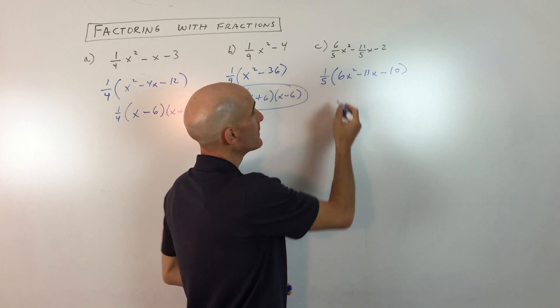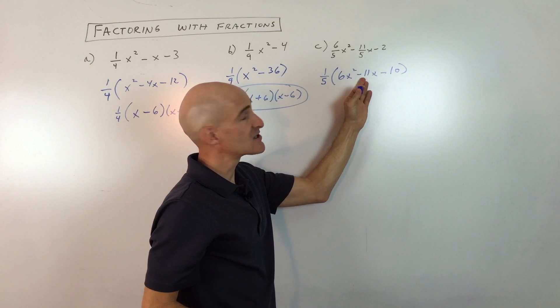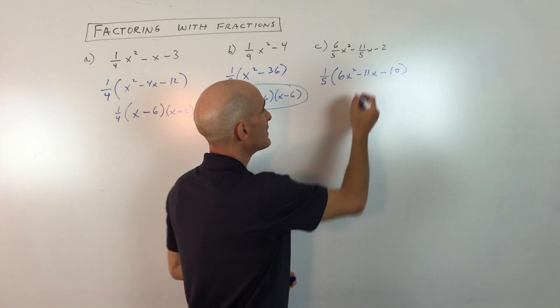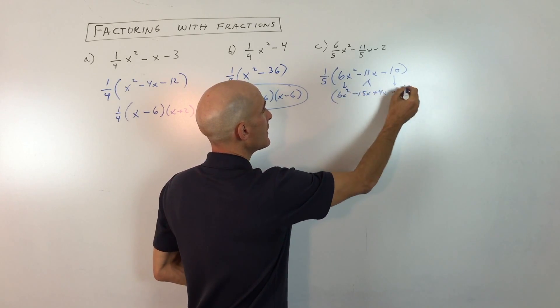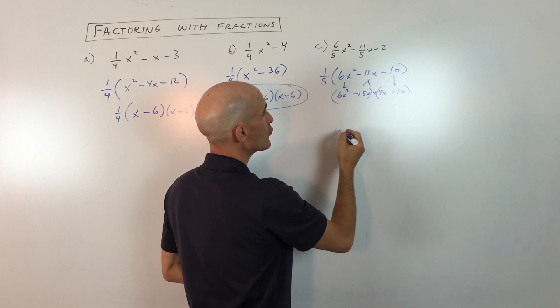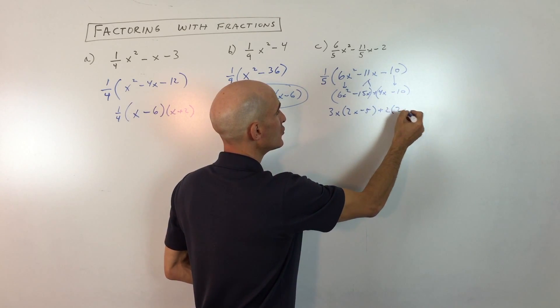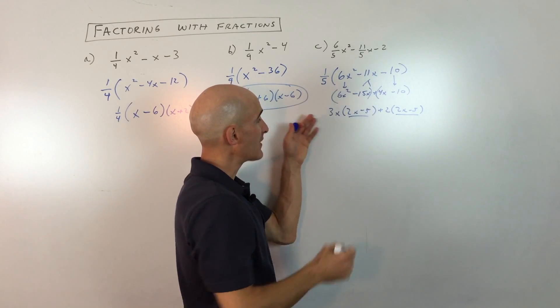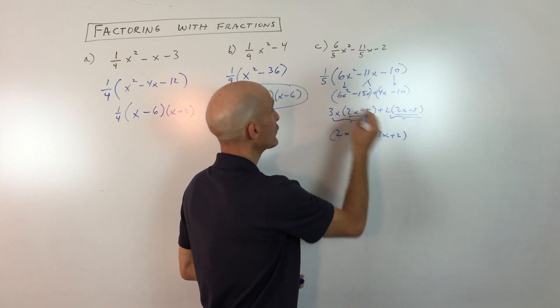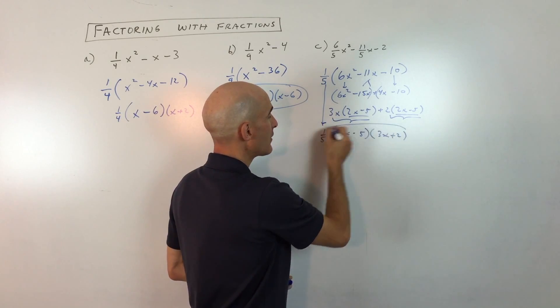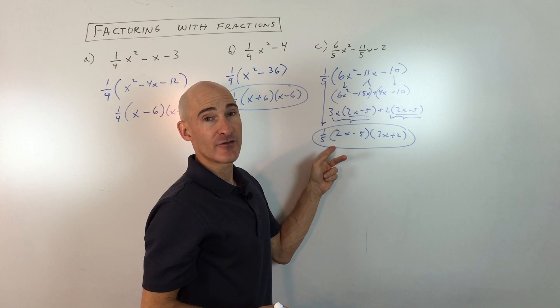But then from here, we want to see if we can factor it further. So six times negative 10 is negative 60. What multiplies to negative 60, but adds to negative 11? That would be negative 15 and positive 4. So I'm going to bring down the 6x squared and negative 10, and we're going to factor this by grouping. So I'm going to factor out the greatest common factor. That's 3x. I'm going to factor out the greatest common factor here, which is just 2. And you can see we're getting a 2x minus 5 in common. So now I'm going to factor out the 2x minus 5 out of this group and out of this group. And we're left with 3x plus 2. But don't forget about the fraction. We want to bring that down. If we were to multiply all this together, we're going to get back the original trinomial. Notice we just have integer coefficients here, which is what we wanted, by factoring out that fraction right at the very beginning.